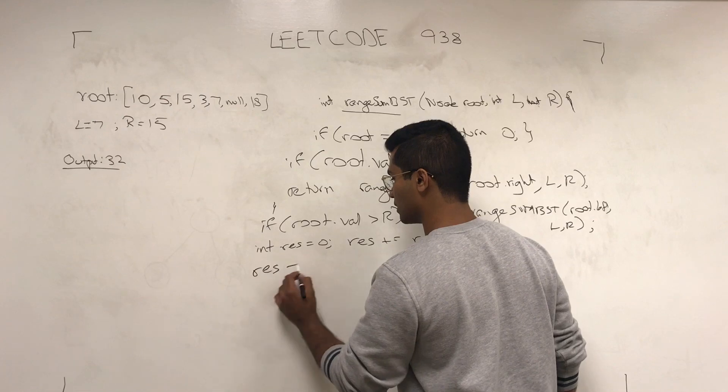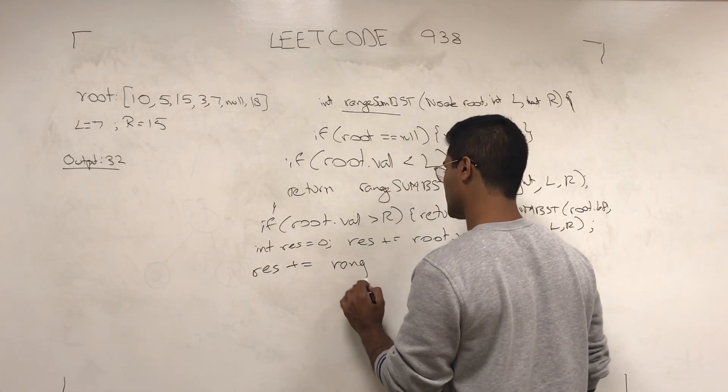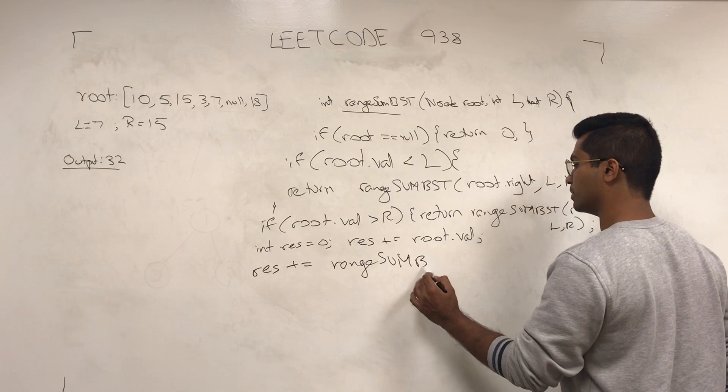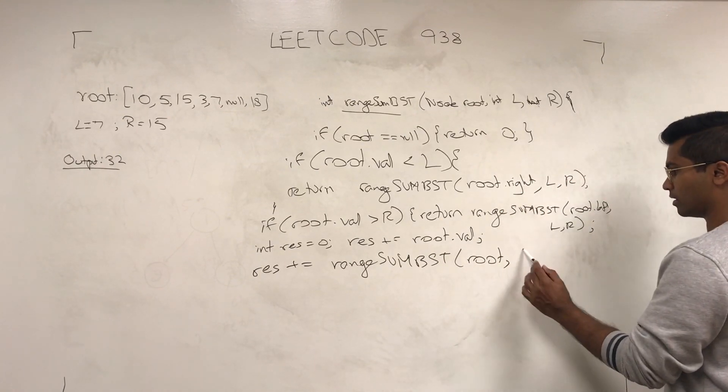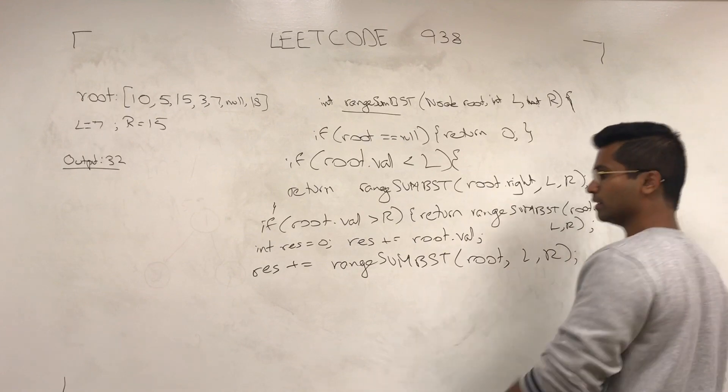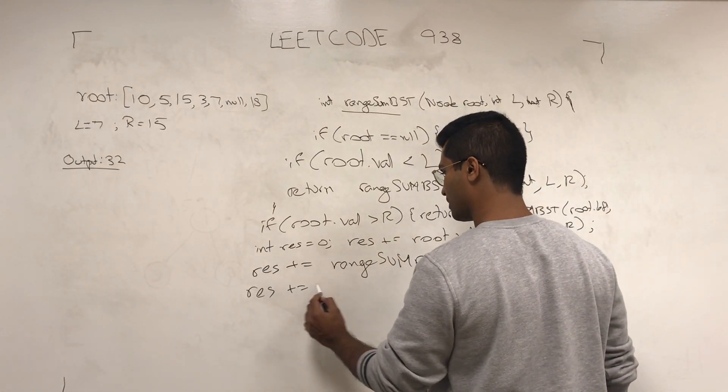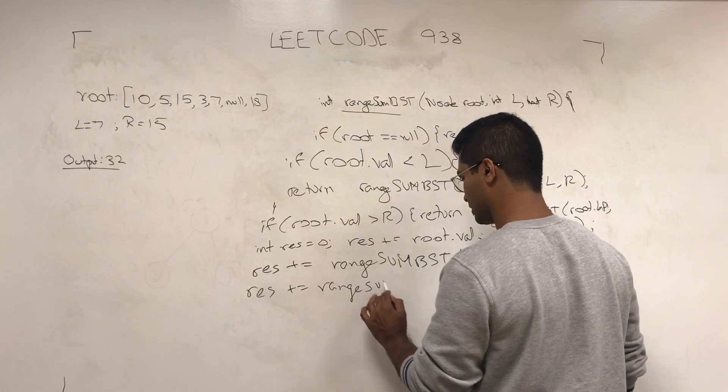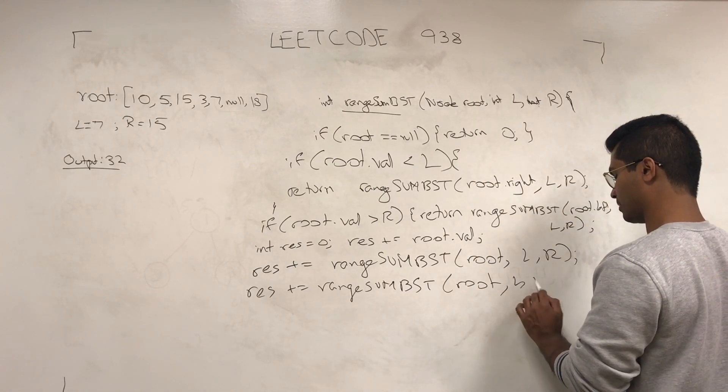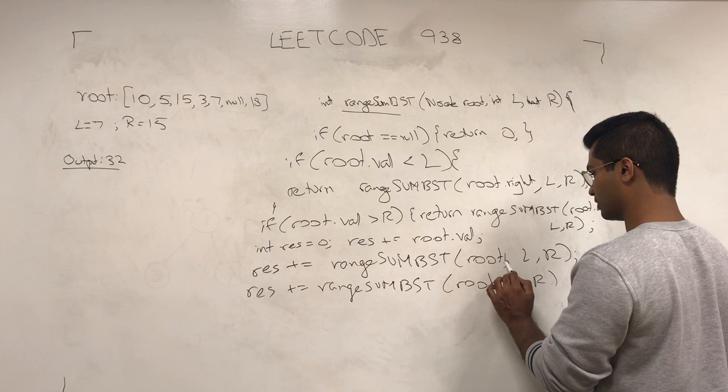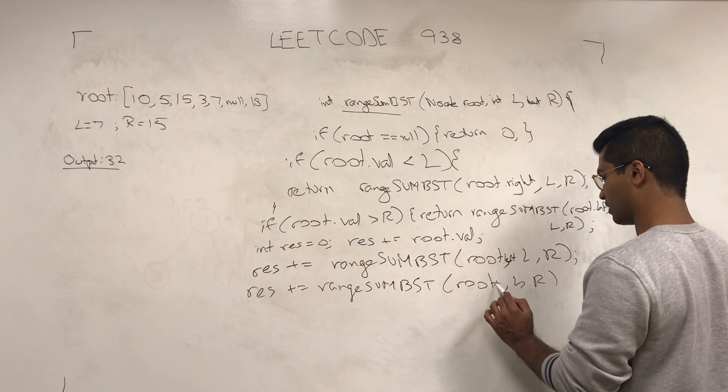Res is incremented by plus equals range sum BST, root.left, L comma R, and res plus equals range sum BST, root.right, L comma R.